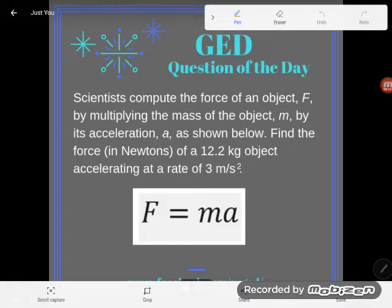It says scientists compute the force of an object F by multiplying the mass of the object m by its acceleration a as shown below. Find the force in Newtons of a 12.2 kilogram object accelerating at a rate of 3 meters per second squared. And they give us this formula.